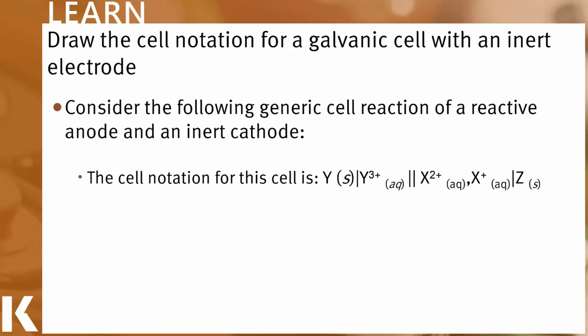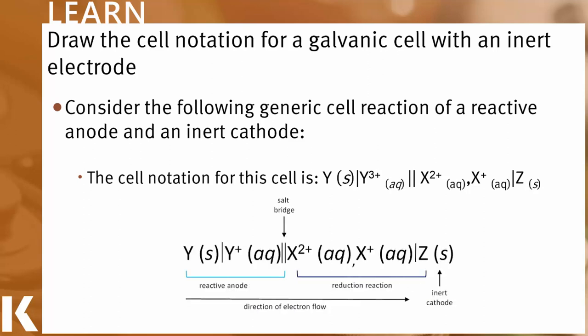And over on the other side, in the cell where the reduction is happening, we're going from X2+, down to X+, both of which are staying in the aqueous phase. Therefore we separate those two species by the comma. We do then have a vertical bar because there is a phase boundary to the solid inert electrode Z. So here you can see how we put this all together. And here are the pieces again just labeled specifically for your reference.